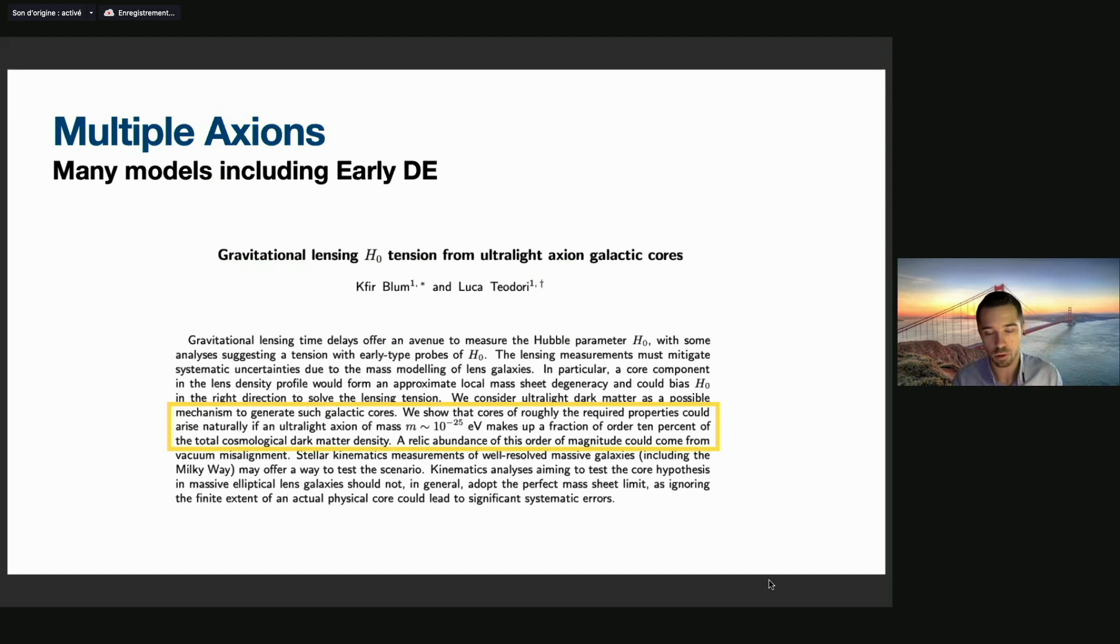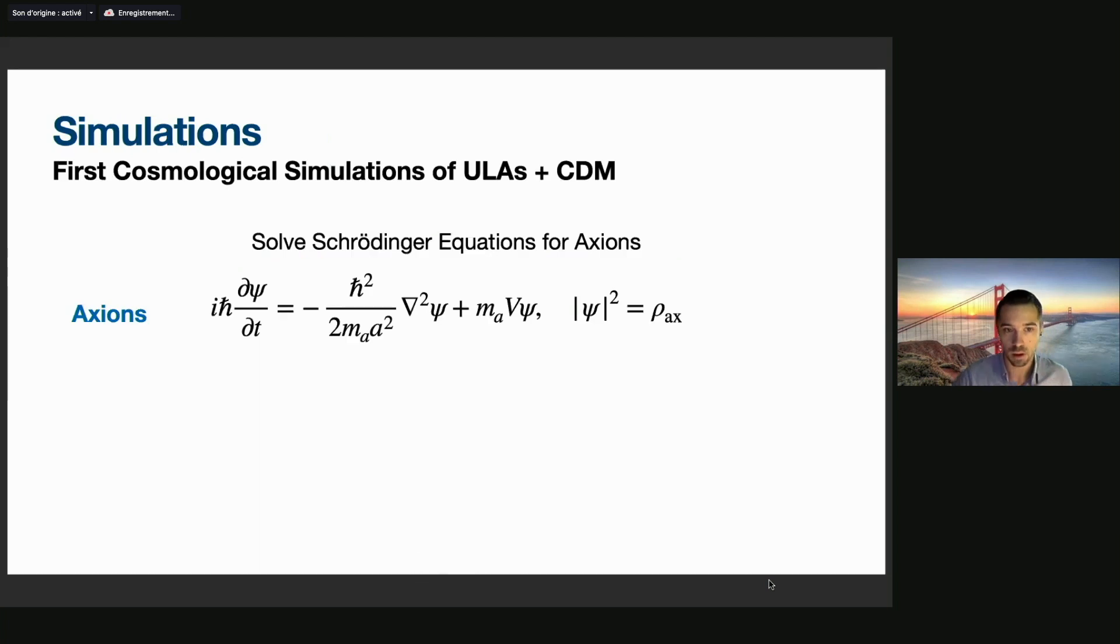This is going to be between zero and one. As we tend towards zero we just recover lambda CDM, and as we tend to a fraction of one we get back fuzzy dark matter. Both scenarios have been well studied. So this is the motivation from particle or high energy physics, but there's also some motivation from cosmology. If you look at this paper from Blum and Teodori, by studying the H0 tension from gravitational lensing, they found that having an ultralight axion of mass 10 to the negative 25 eV, composing 10 percent of the dark matter, alleviated that lens tension by the formation of cores in the lensing galaxies.